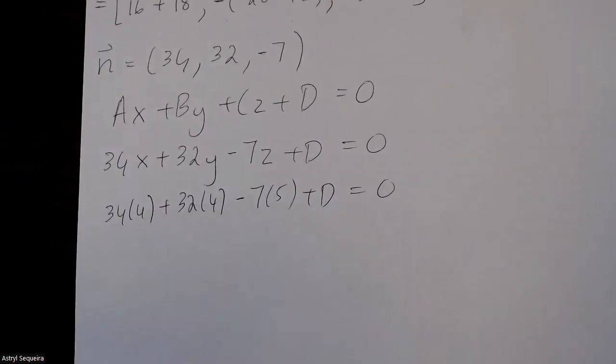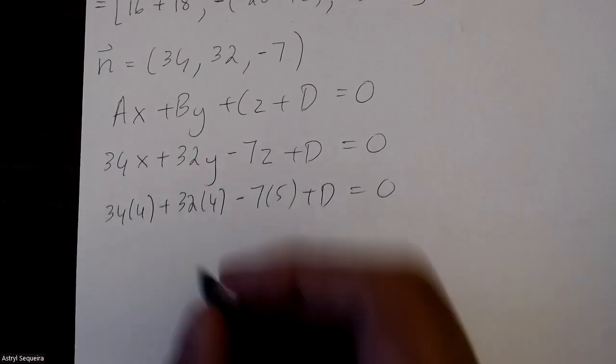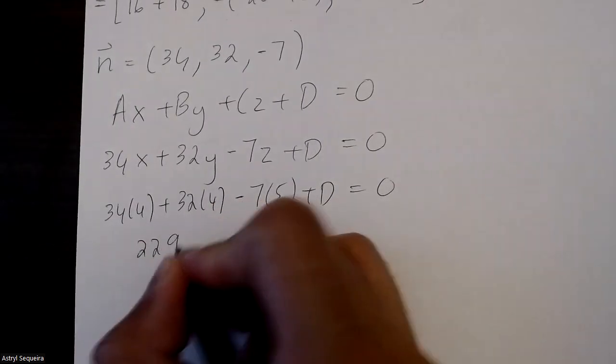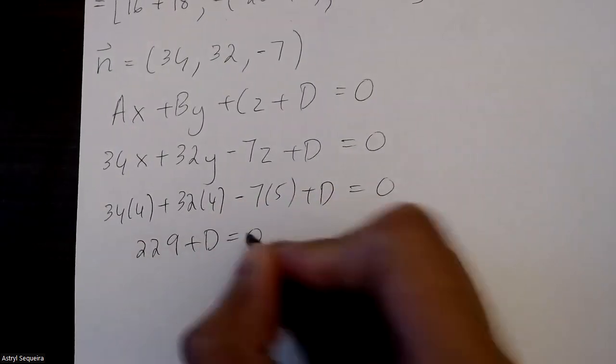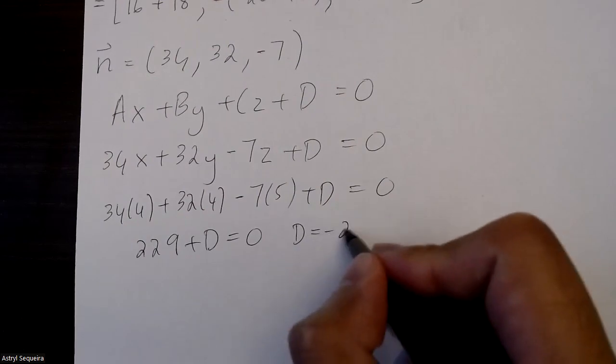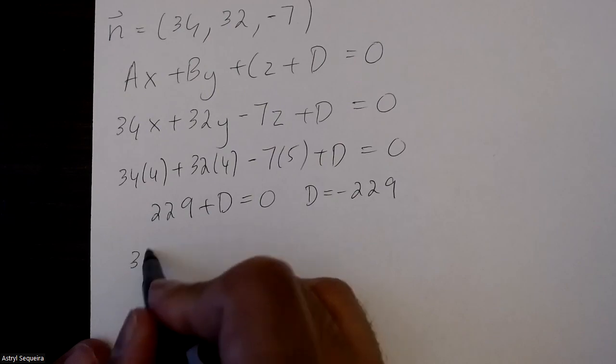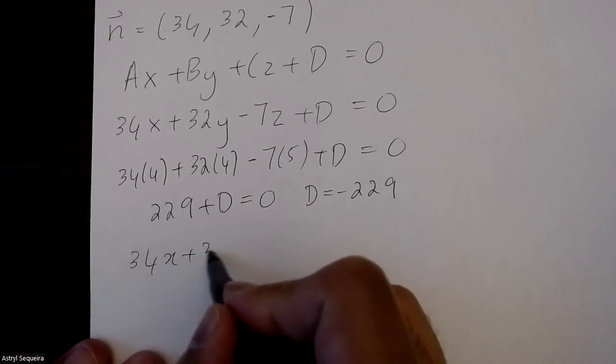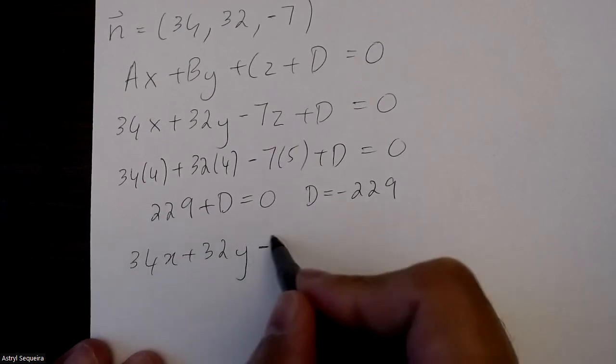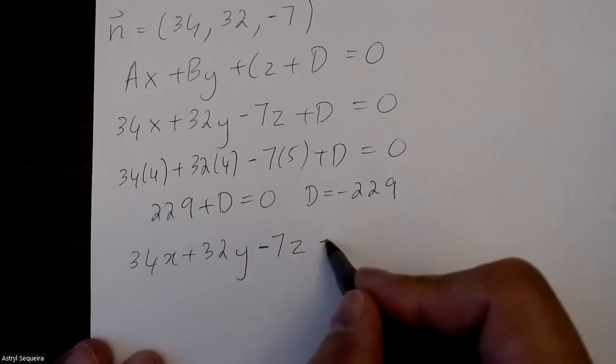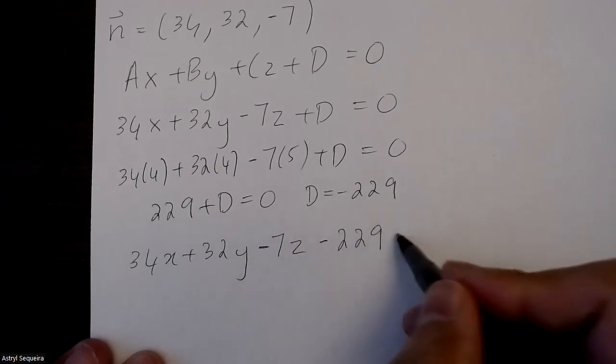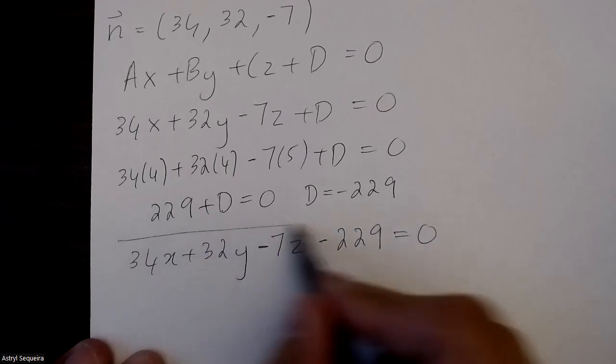Now I'll just do this calculation. 34 times 4 plus 32 times 4 minus 7 times 5 is 229. So d is just negative 229. Now I can rewrite the Cartesian equation as 34x plus 32y minus 7z minus 229 equals 0.